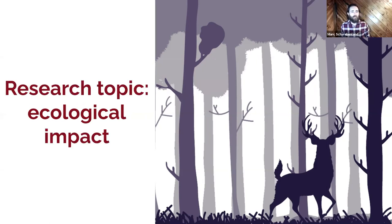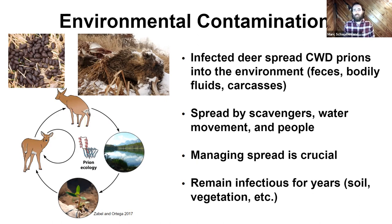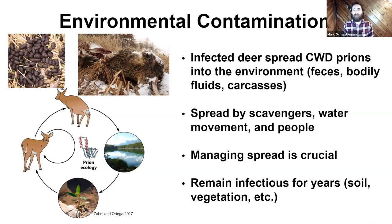The next research topic is ecological impact — what does CWD mean for the environment? Environmental contamination: positive animals are depositing prions into the environment through feces, urine, or when they die, creating hotspots. Infected deer spread that throughout the environment, further spread by scavengers pulling pieces out, by water movement, and ultimately by people — we're probably the worst at moving chronic wasting disease around. Managing that spread is crucial because those infectious prions remain infectious for years in the soil and in vegetation.